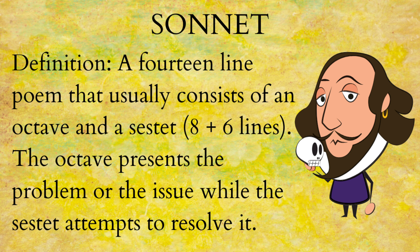The next thing is the sonnet. The definition is a 14-line poem — Shakespeare is very famous for this — that usually consists of an octave and a sestet. An octave is an eight-line stanza and a sestet is a six-line stanza. The octave presents the problem or issue in the poem, while the sestet attempts to resolve it. If you're not a big fan of Shakespeare, you should go check out one of his famous sonnets.